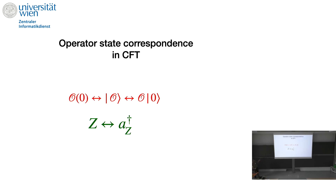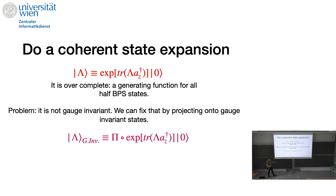There's another way to approach this problem using generating functions. To do that, I need to tell you a little bit about the operator-state correspondence in conformal field theory. If you have an operator of fixed dimension in CFT, you can associate a state to it — the dimension of the operator is the energy of the state. The operator Z in N=4 Yang-Mills gets related to a raising operator of the same Z field, which is the S-wave of the operator in the sphere quantization. What I'll do now is go from occupation number states to coherent states — coherent states are classical states of the harmonic oscillator. With N² harmonic oscillators, you introduce an N×N matrix of parameters.